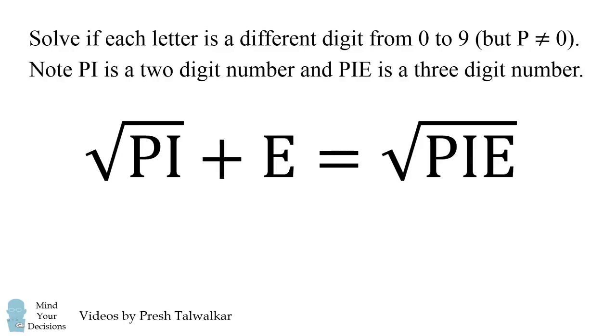Note, PI is a two-digit number and PIE is a three-digit number. You're not allowed to use calculators to solve this problem.